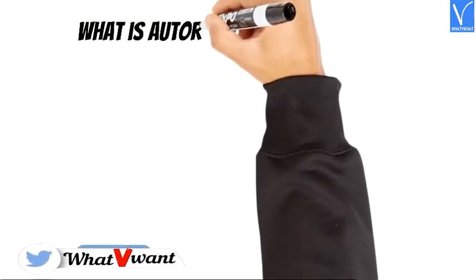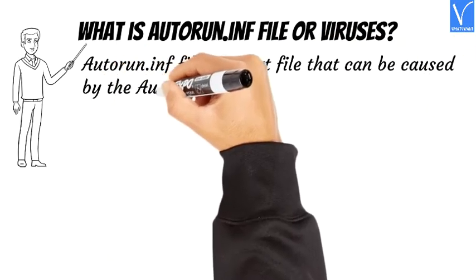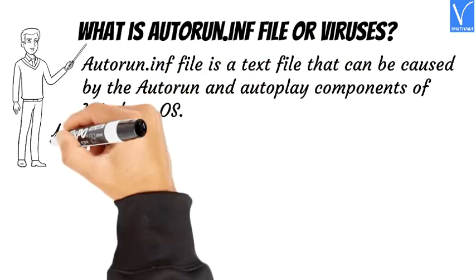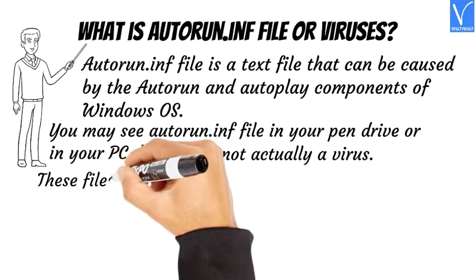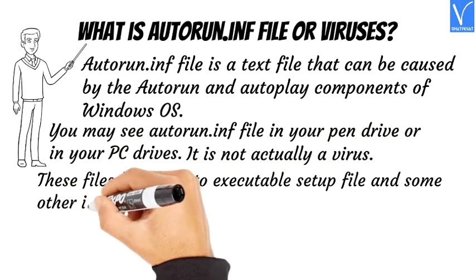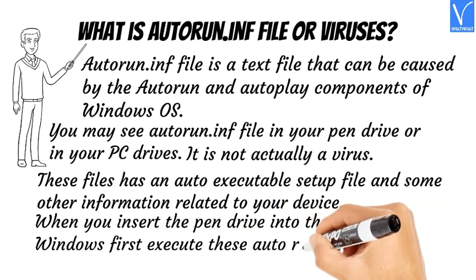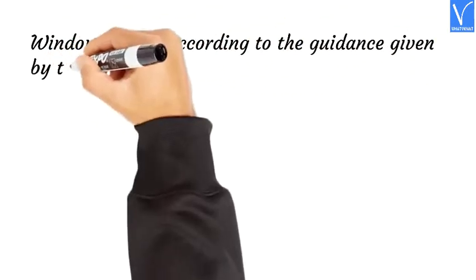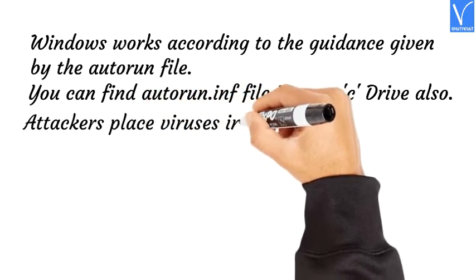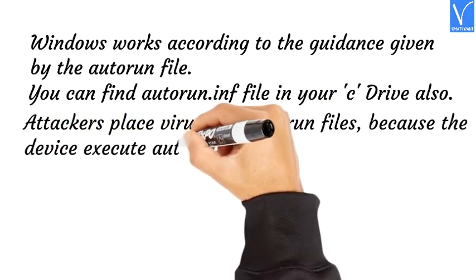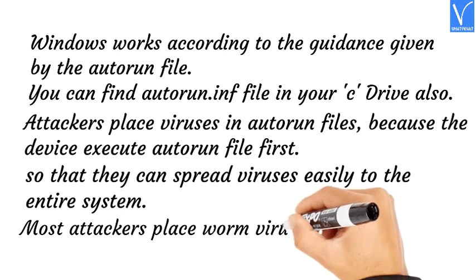First you need to know what is an autorun.inf file or autorun viruses. Autorun.inf is a text file that can be used by the autorun and autoplay components of Windows OS. You may see autorun.inf in your pen drive or in your PC drives. It is not actually a virus — these files have an auto-executable setup and some device information. When you insert the pen drive into the USB slot, Windows first executes these autorun files and works according to the guidance given by them. Attackers place viruses in autorun files because the device executes autorun files first, so they can spread viruses easily to the entire system. Most attackers place worm viruses in autorun.inf.